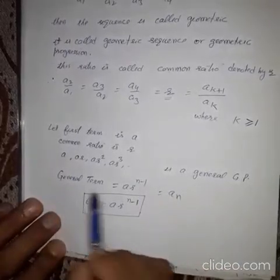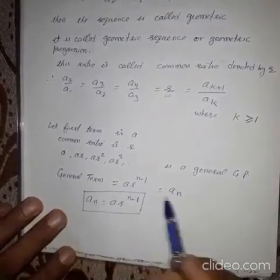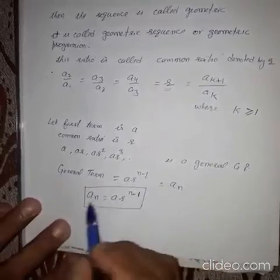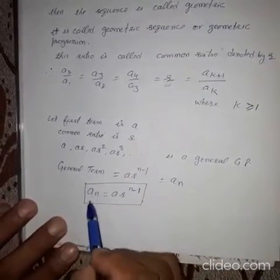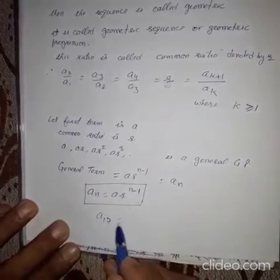And general term of GP, that is A into R raised to the power N minus 1. General term, it is called AN, Nth term. So, if we want to calculate any terms, we will use this formula. Suppose, we want to find 17th term of this sequence.